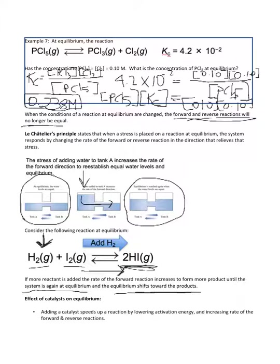If you add a reactant, you shift towards the products. If you add some products — say you added some HI to the system — then the reaction shifts in the other direction, creating more reactants until the system is at equilibrium. Whichever side you add on, the reaction shifts to the opposite direction. If you add reactants, you make more products and shift to the right. If you add products, you create more reactants and shift to the left.